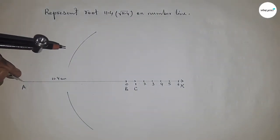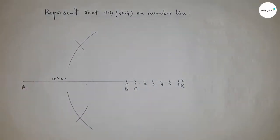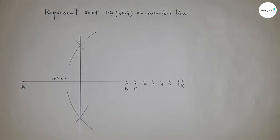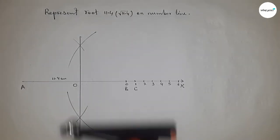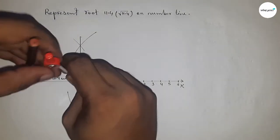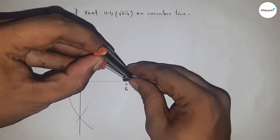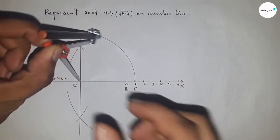Now join these points which meet at point O. Now take the length OA and OC to draw a semicircle through the points A and C.